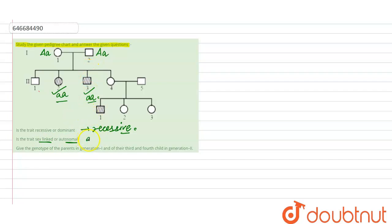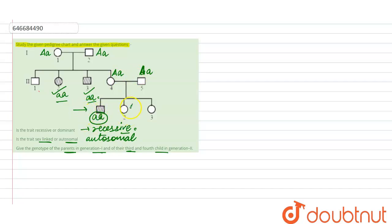We need to find the genotype of the parents in generation one — already found to be capital A small a — and their third and fourth children in generation two. The third child in generation two will be capital A small a (heterozygous), which resulted in the first child of generation three being small a small a (affected). The others in generation three will be capital A capital A or capital A small a. The fourth child in generation two will be capital A small a.